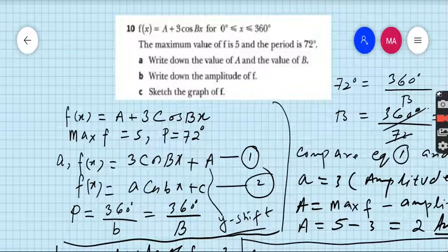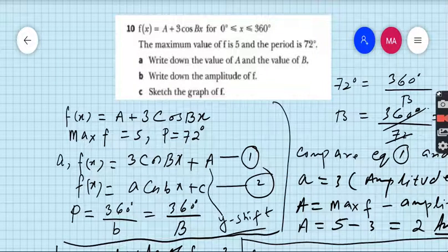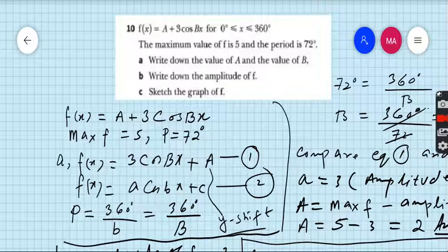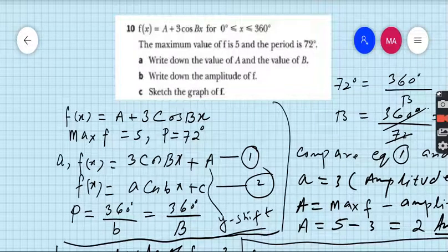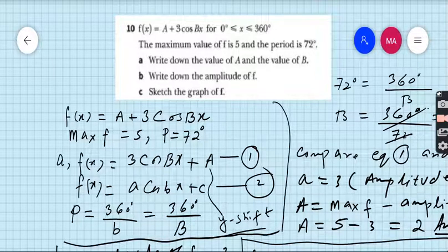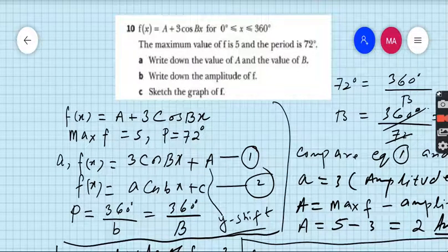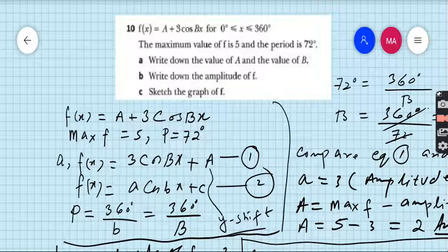First you have to write the question: f(x) equals A plus 3cos(Bx). I did some work for you because the graph is time consuming and to elaborate more accurately. The maximum value of f is given as 5 and the period is 72 degrees. So assign equation 1 as f(x) equals 3cos(Bx) plus A, and write the general equation which is in your book: f(x) equals a cos(bx) plus c as equation 2.